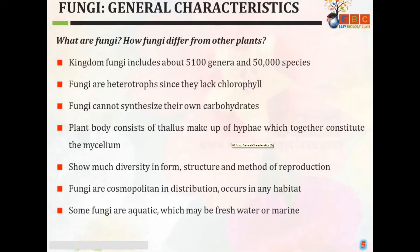As we saw in the first slide, there are 50,000 species, so they are diverse in form, structure, and manner of reproduction. Fungi are cosmopolitan in distribution and occur in any habitat. Any living organism which is found in any form of environment is called cosmopolitan. So fungi are cosmopolitan — they can be found in any type of environment.